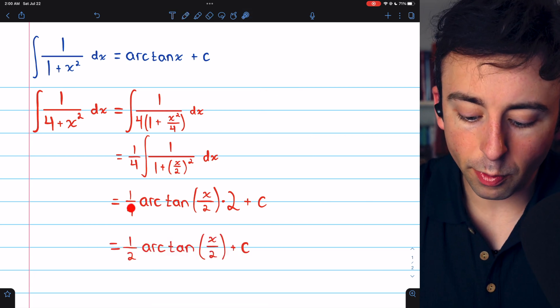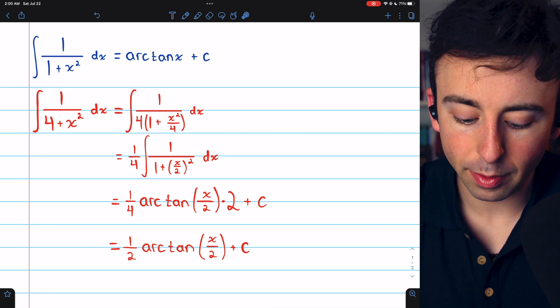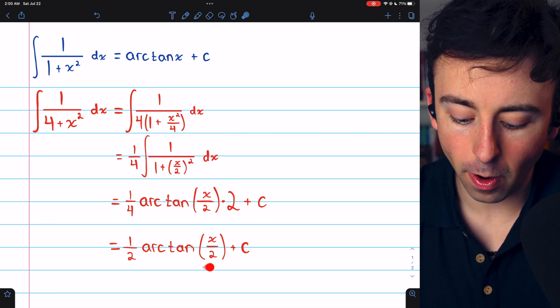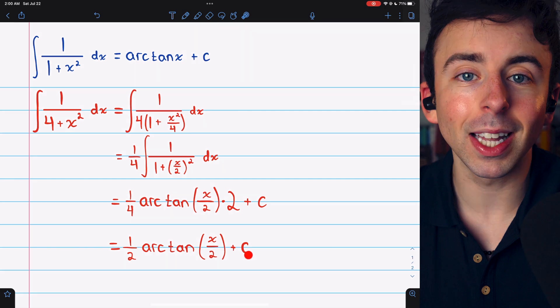Finally, simplifying our answer, 1 fourth times 2 is 1 half. So final answer is 1 half arctan of x over 2 plus c.